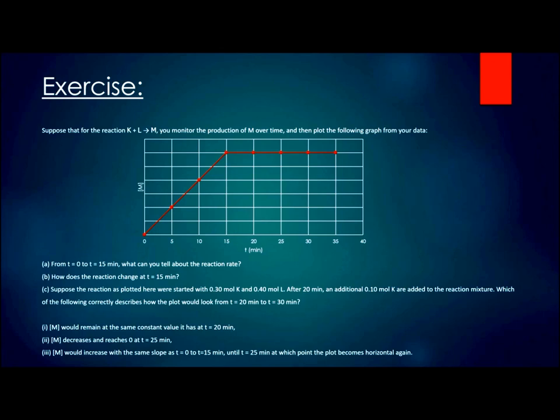After 20 minutes, an additional 0.10 mole K were added to the reaction mixture. Which of the following correctly describes how the plot would look from t20 minutes to t30 minutes? Statement one: M would remain at the same constant value it has at t20 minutes. Statement two: M decreases and reaches zero at t25 minutes. Statement three: M would increase with the same slope as t0 to t15 minutes until t25, at which point it would become horizontal again.